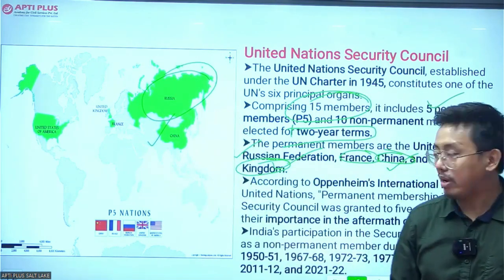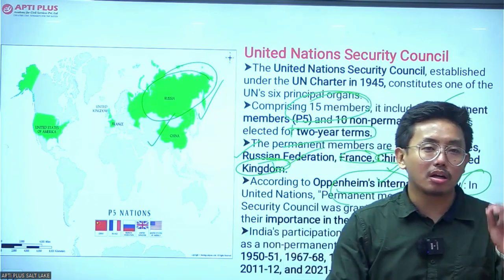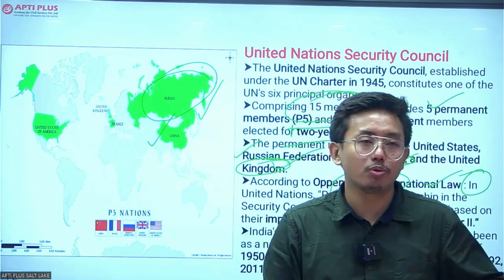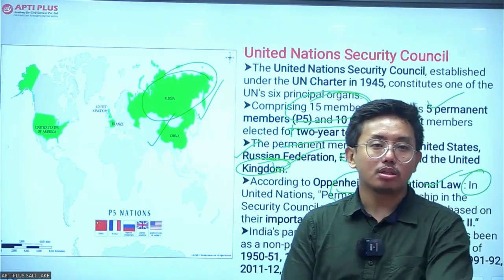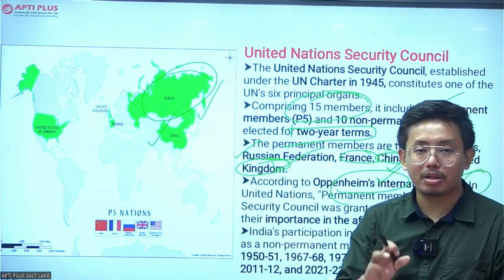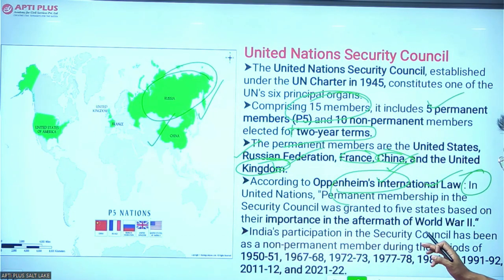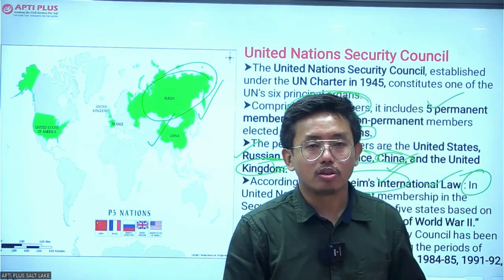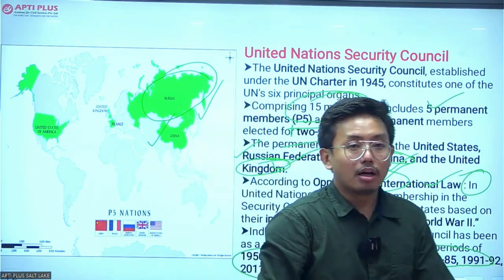According to Oppenheim's International Law, the permanent members were given their seats based on their contribution in World War II. These five countries made significant contributions to WWII, which is why they have permanent representation in the UNSC. India has participated in the UNSC as a non-permanent member on multiple occasions over the years.